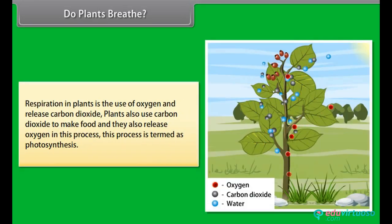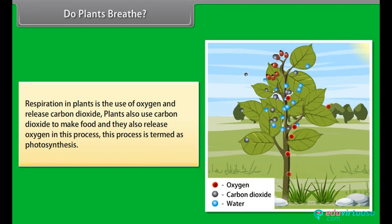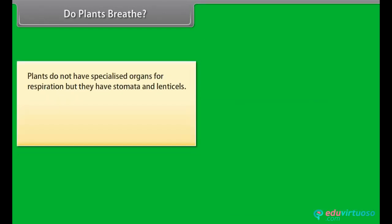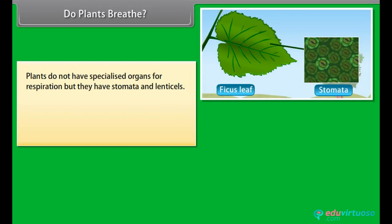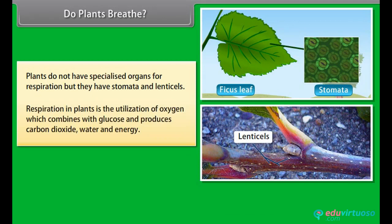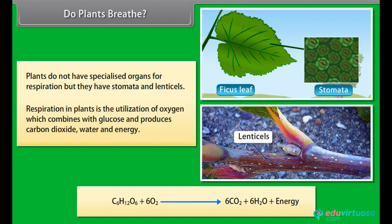Do plants breathe? There is no direct answer to this question. Respiration in plants is the use of oxygen and release of carbon dioxide. Plants also use carbon dioxide to make food and release oxygen — this process is termed as photosynthesis. Plants do not have specialized organs for respiration, but they have stomata and lenticles. Respiration in plants is the utilization of oxygen, which combines with glucose and produces carbon dioxide, water and energy.